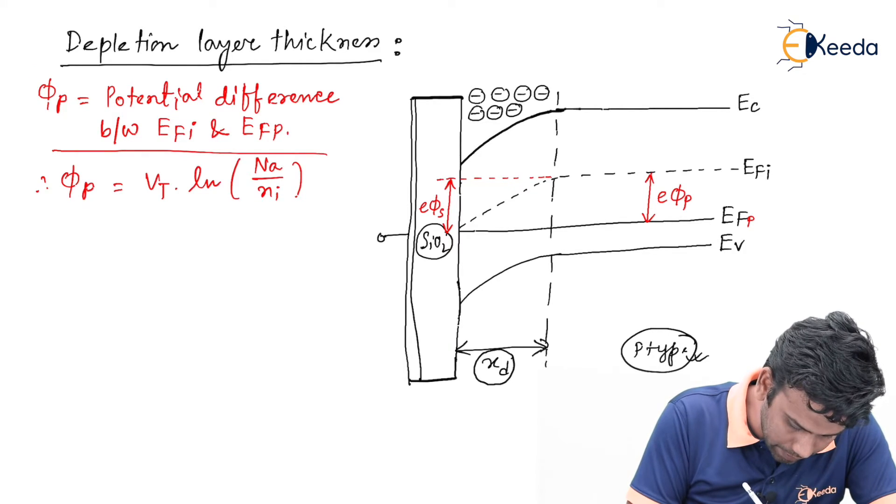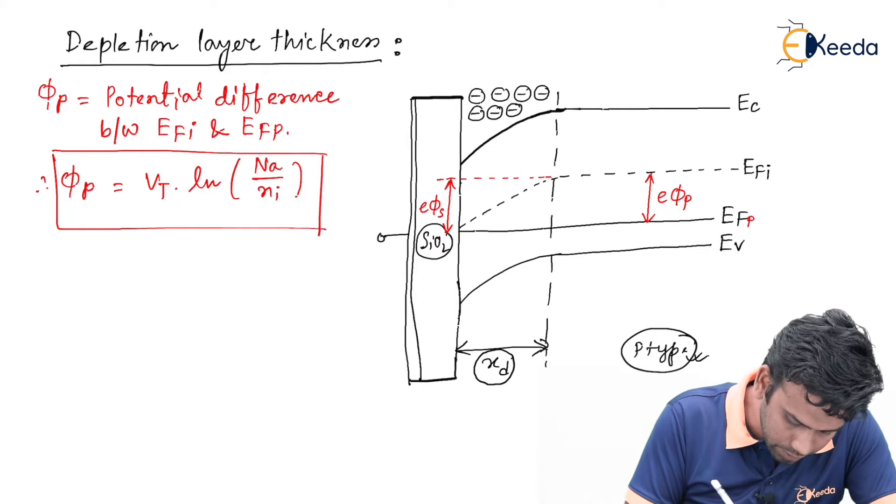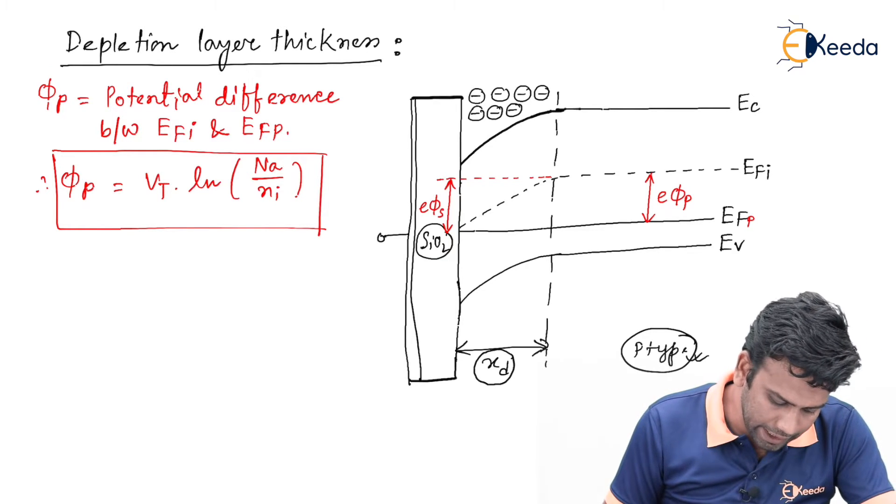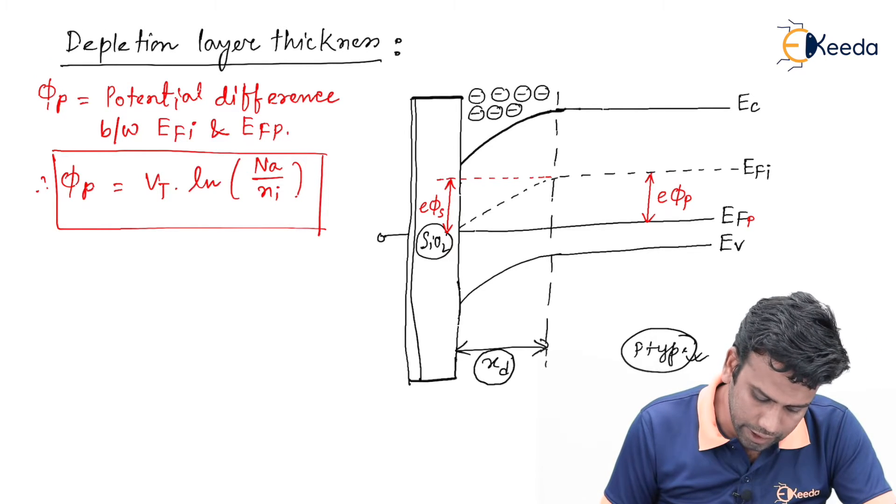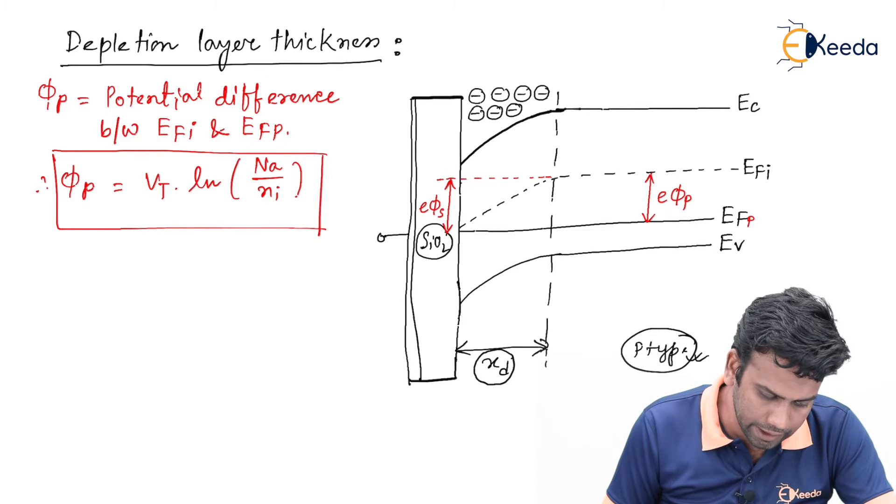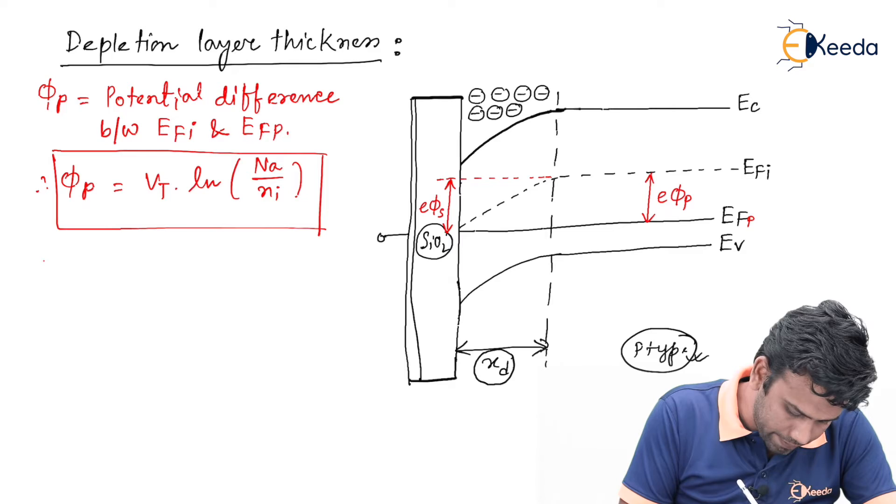Because we have taken a p type substrate, where Na is the acceptor concentration in the p type and Ni is the intrinsic carrier concentration.